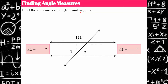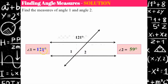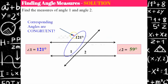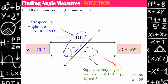Welcome back. So 121 degrees — this angle right here — is a corresponding angle to angle one, and therefore angle one has a measure of 121 degrees. Angles one and two are supplementary, so 121 plus 59 degrees equals 180 degrees. You could use an equation: 121 plus angle two equals 180. Subtract 121 from both sides and we get that angle two is 59 degrees.